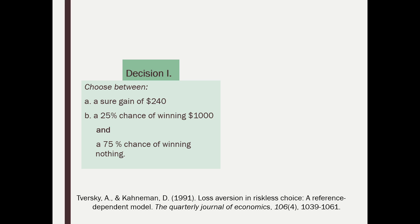Tversky and Kahneman pointed out that a 25% chance of winning $1,000 and a 75% chance of winning nothing averages out over the long run to winning $250 — because 25% of $1,000 is $250. But we don't get to play it a hundred times; we have to make a choice right now. So it's not surprising that most people pick the sure gain of $240.